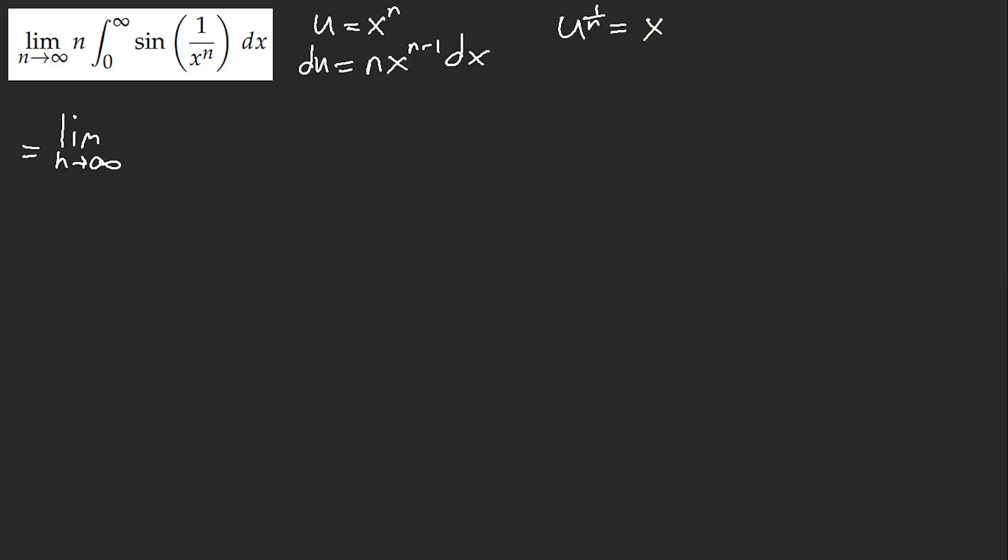We get limit of n to infinity, the n goes away, we get 0 to infinity. Then we have sine of 1 over u, and then du. We technically have divided by u times, then x is u to the 1 over n, u to the power of 1 over n.